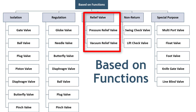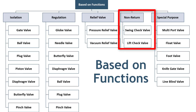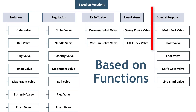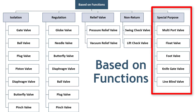Pressure and vacuum relief valves are used to prevent overpressure and vacuum in the system that can damage the piping and equipment. Non-return valves such as swing and lift check valves prevent backflow. Some valves are designed to serve a special purpose, such as multiport, knife, and line blind valves.